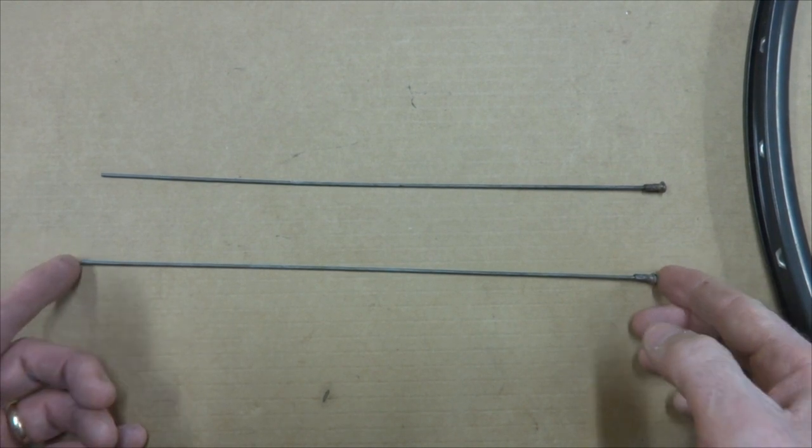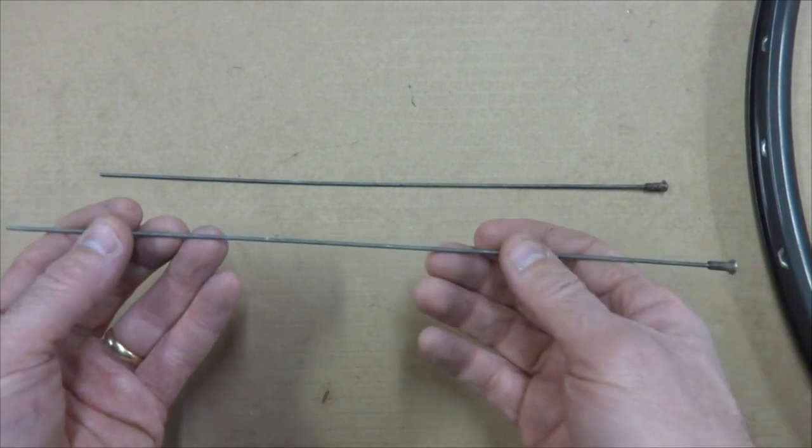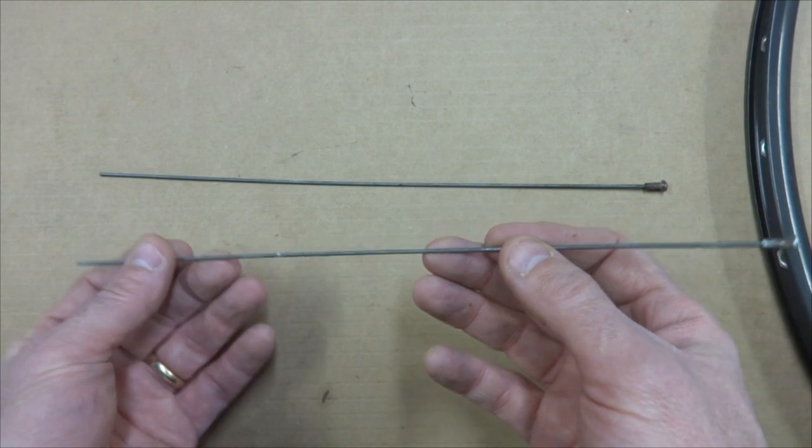Here are the high-tech fancy tools that I made. I call them ERD measuring thingies. They're made out of a couple old spokes.